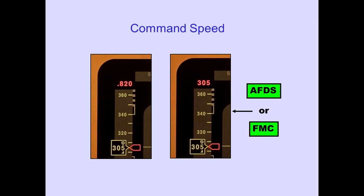Command speed in knots or Mach is displayed at the top of the airspeed tape and by an indicator on the tape. The autopilot flight director system or selected flight management computer provides this information.